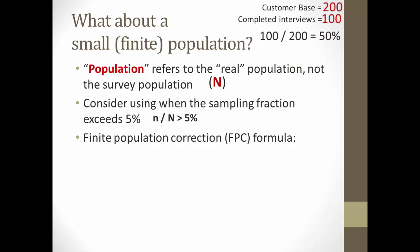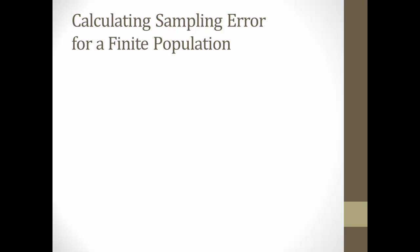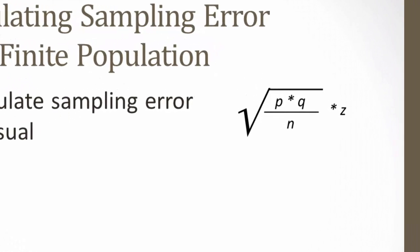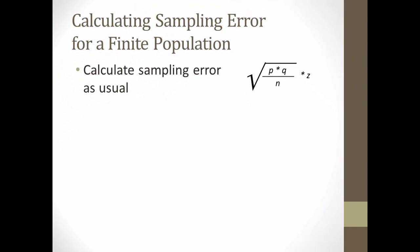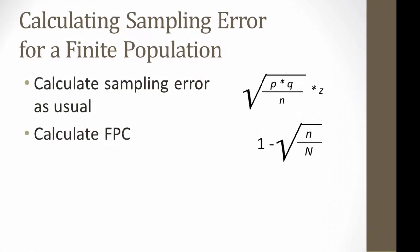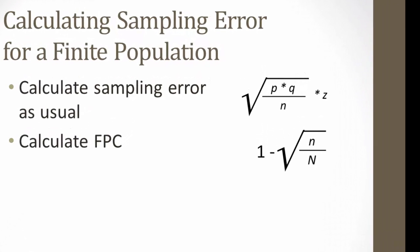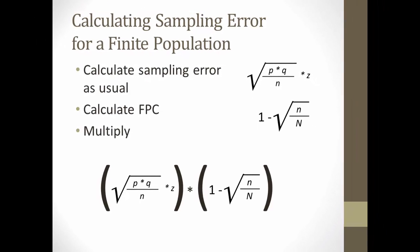The formula is fairly simple, 1 minus the square root of little n over big N. Remember that little n is the number of respondents in the study population, and big N is the number of respondents in the overall, or real, population. Now, I've also seen the formula written this way. You calculate sampling error for a finite population by first calculating the sampling error as usual. Remember the formula of the square root of p times q divided by n multiplied by the z-score. Then you calculate the finite population correction, 1 minus the square root of n over N, small n over big N. And then you multiply the two products together.